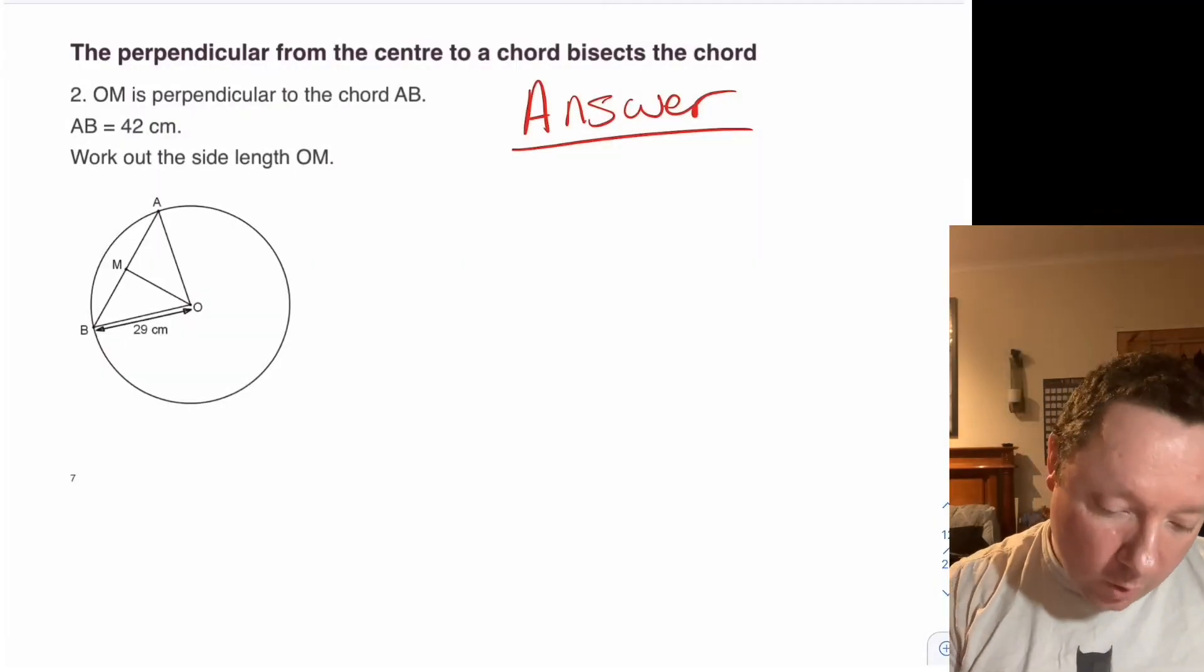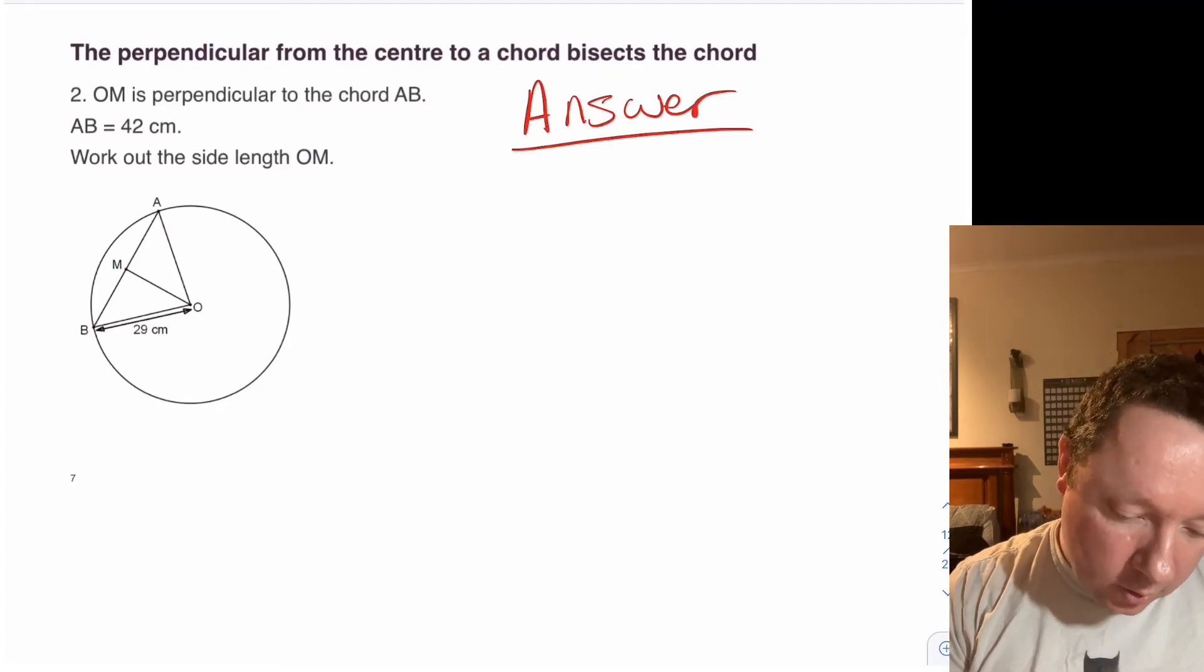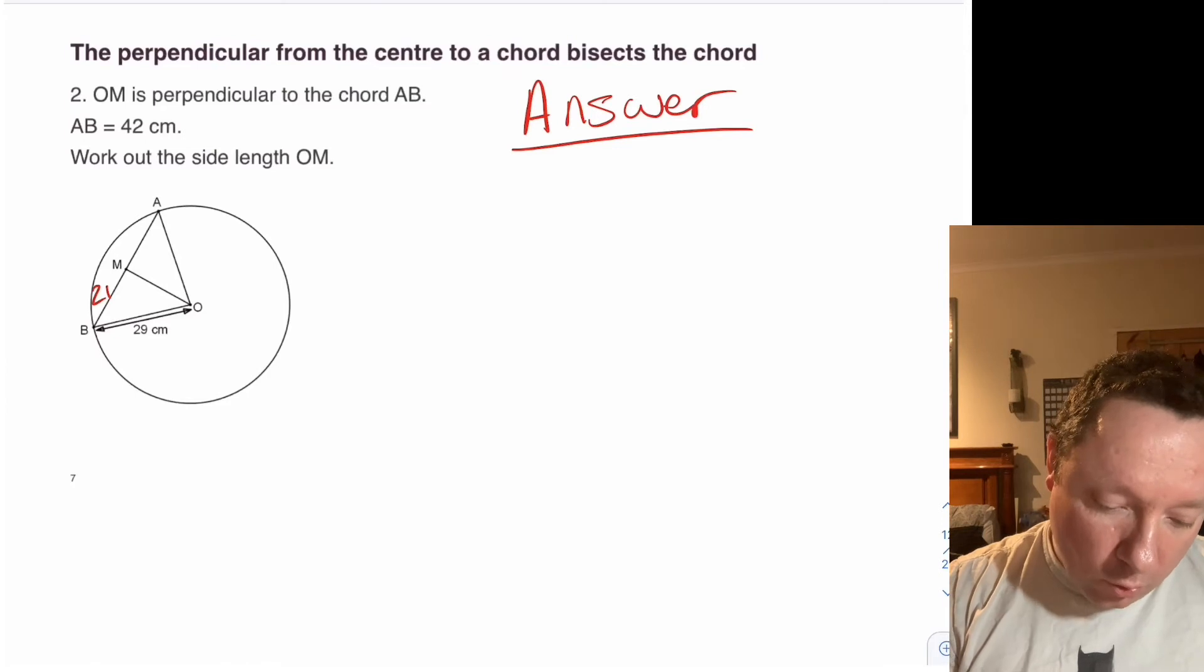Okay and the answer to that one. So we know that the whole line A to B is 42. So we can go from B to M to get 21. So we've got 21 here.